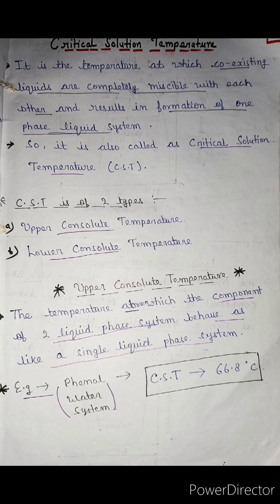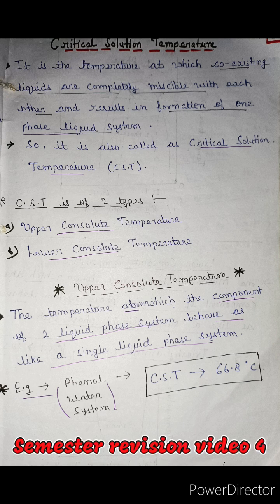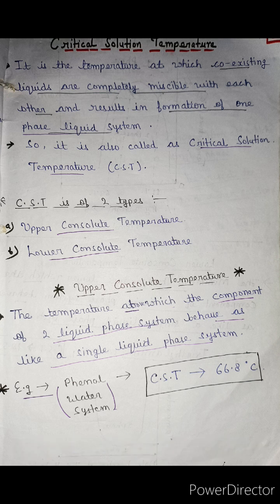Critical solution temperature is the temperature at which the coexisting liquids are completely miscible with each other, resulting in the formation of a one-phase liquid system. It is also called the critical solution temperature.